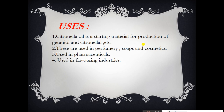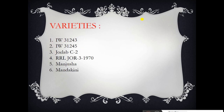Some important uses of citronella: first, citronella oil is a starting material for production of geraniol oil and citronellol oil. Second, these are used in the perfumery, soap, and cosmetic industry. It is also used in the pharmaceutical industry and in flavoring industries.